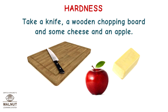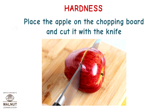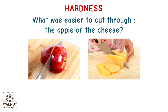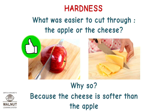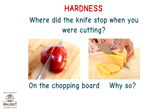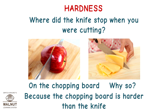Take a knife, a wooden chopping board, some cheese, and an apple. Place the apple on the chopping board and cut it with the knife. Then place the cheese on the board and cut it with the knife. What was easier to cut through — the apple or the cheese? Because the cheese is softer than the apple. Where did the knife stop when you were cutting? On the chopping board — because the chopping board is harder than the knife.